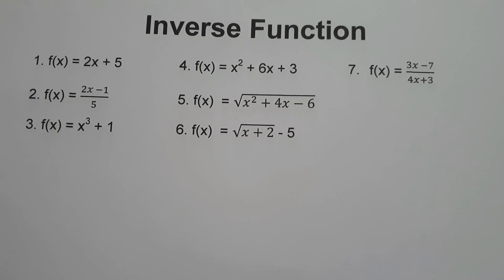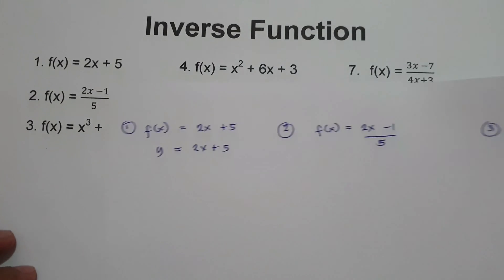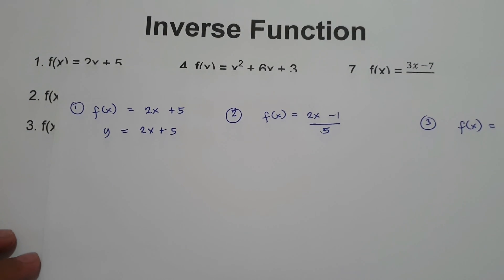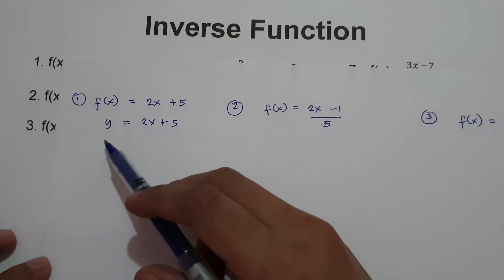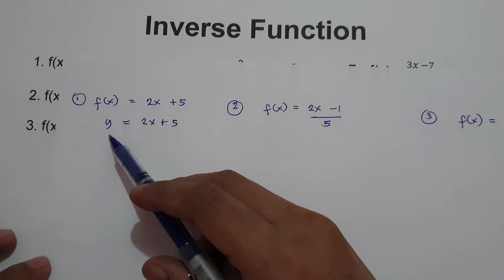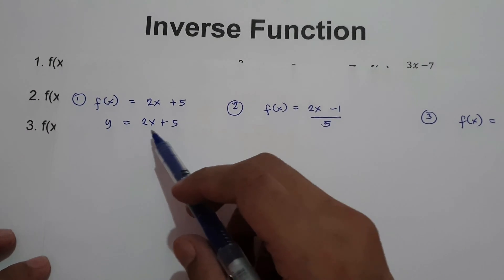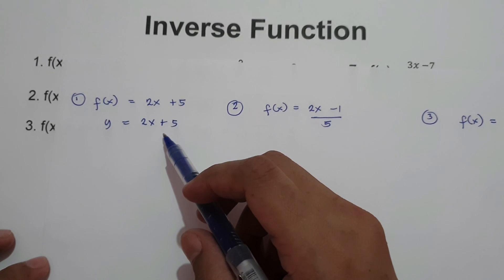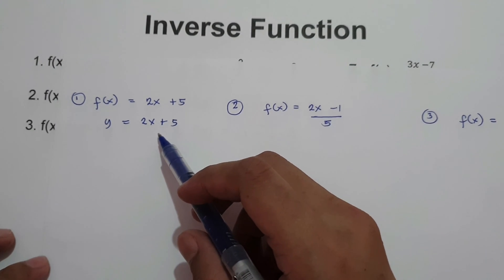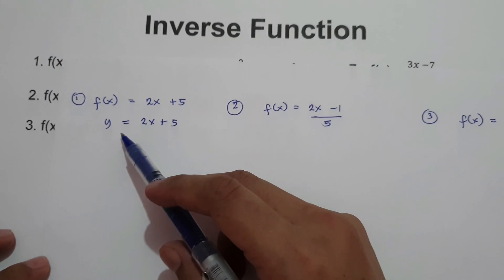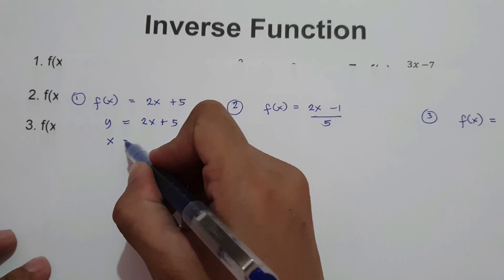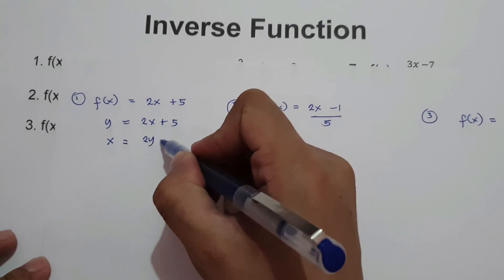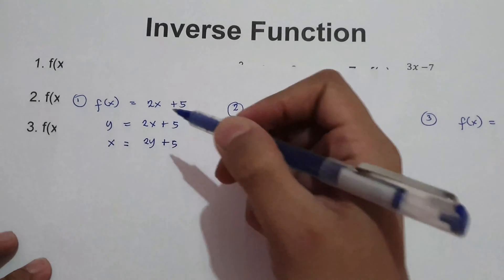So what are we going to do in order to find the inverse of this function? The first step is to change f of x in terms of y. So we have y equals 2x plus 5. After this step, we are going to switch x and y. We have x equals 2y plus 5.